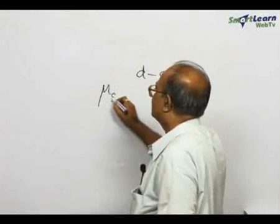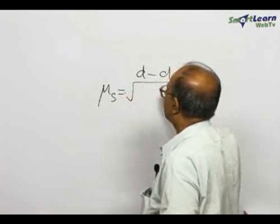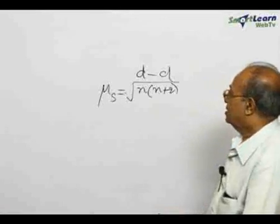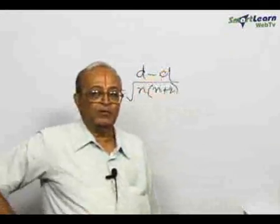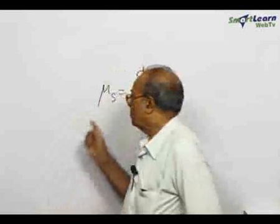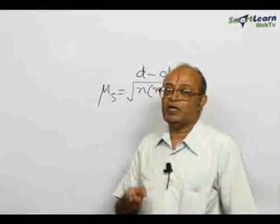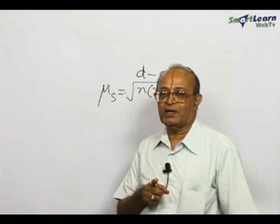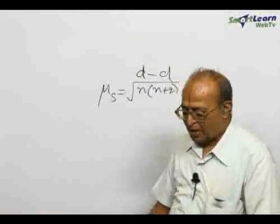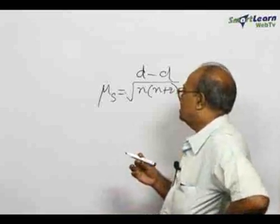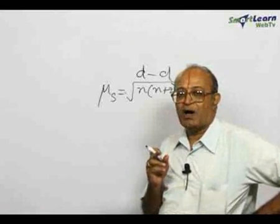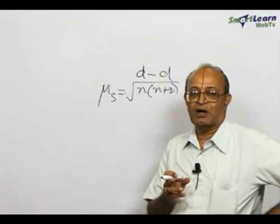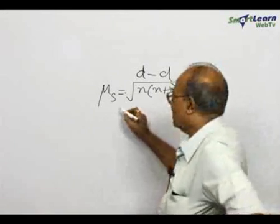You are familiar with this expression: μs is equal to root of n(n+2). The μs is the spin-only magnetic moment value, given by the expression √(n(n+2)), where n represents the number of unpaired electrons.